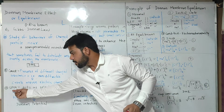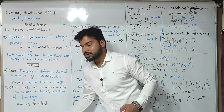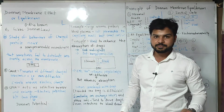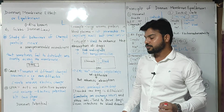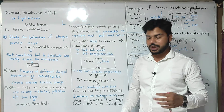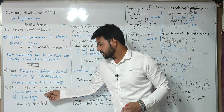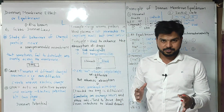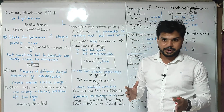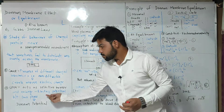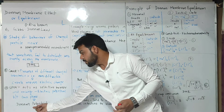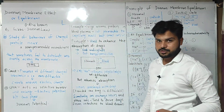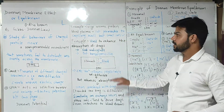If we talk about the semi-permeable membrane, it acts as a selective barrier for the ions, and an electric potential arises between two phases across the membrane. This potential we call the Donnan potential.